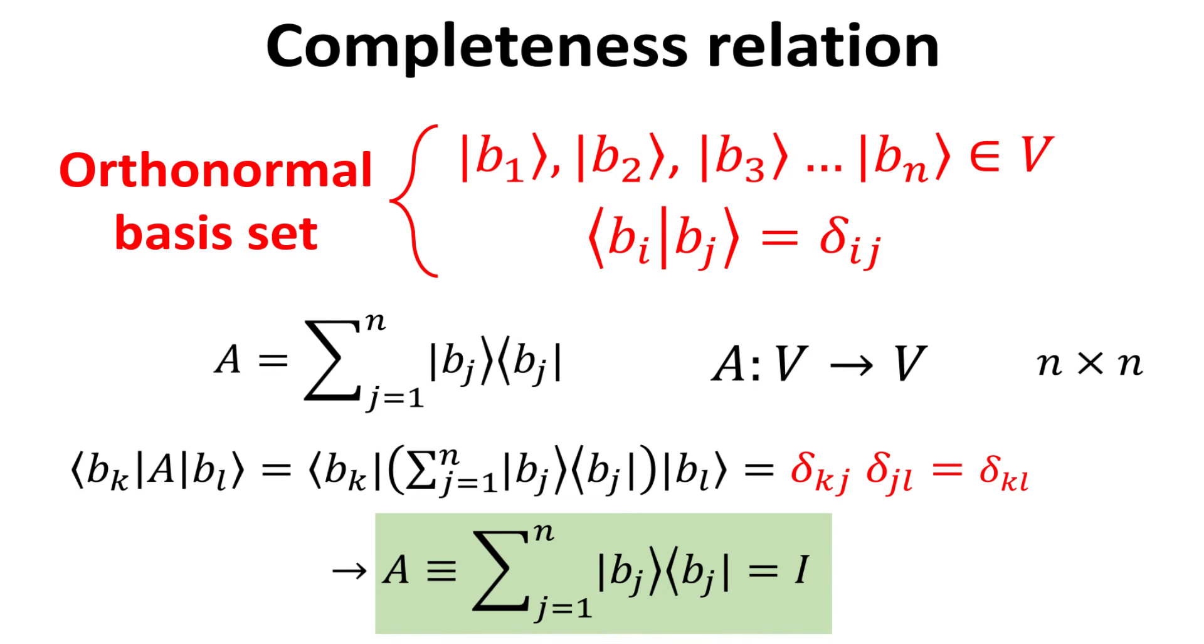Much akin to the concept of basis vectors in representing a vector, the matrix A can also be enumerate with a defined set of basis vectors. Here, we shall use the b sub j kets as our basis set. To reveal the matrix elements of A, at row k and column l, we simply sandwich the A with the b sub k bra on the left and the b sub l ket on the right. Using the orthogonality properties, we can show that the matrix element is a delta function of k and l.